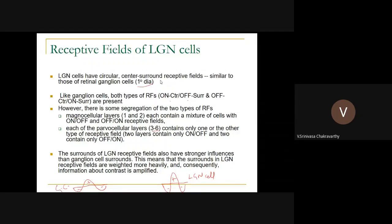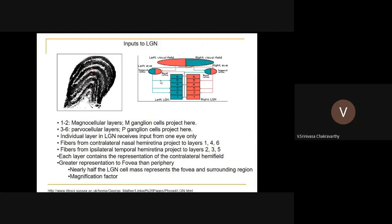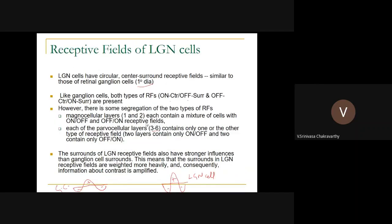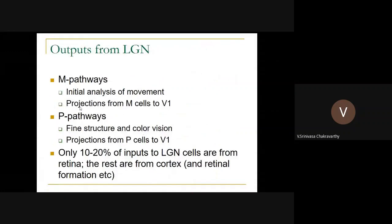Good morning. Yesterday we were discussing the LGN, which is a midway point between the retina and the visual cortex. We discussed that there are six layers on each side of the LGN, with complicated connectivity from the retina. LGN cells have on-center-off-surround or off-center-on-surround receptive fields. There is also a segregation of magnocellular and parvocellular layers, reflecting the ganglion cells with small or large cell bodies, and this segregation is maintained in the LGN.